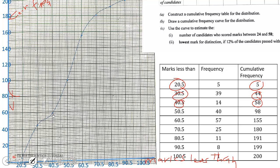Now for part C, we use the curve to estimate the number of candidates who scored marks between 24 and 58. We locate 24 on the marks axis and trace it to the cumulative frequency, then locate 58 on the marks axis and trace it to the cumulative frequency. Each box is 2 on the cumulative axis, giving us 22 people at mark 24, and 140 plus 2 boxes which is 144 at mark 58. So the number of candidates is 144 minus 22, which equals 122 candidates.